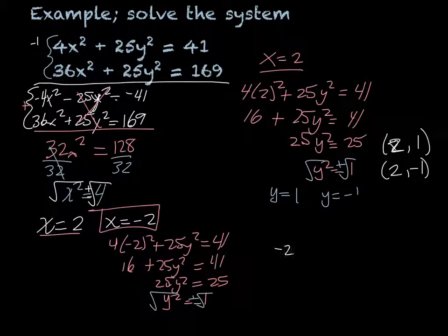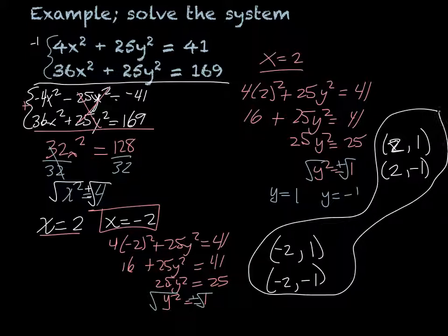So we would again, when x is negative 2, our y could be a positive 1, or our y could be a negative 1. So those are all of our answers. You need to have all four of them to get it correct.